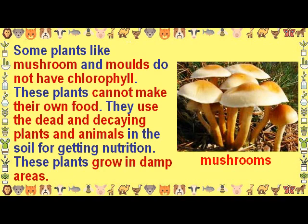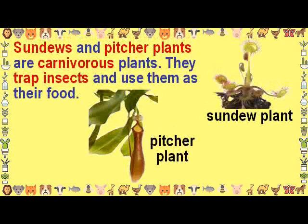These plants use dead and decaying plants and animals in the soil for nutrition, and they grow in damp areas. Sundews and pitcher plants are carnivorous plants — they trap insects and use them as their food.